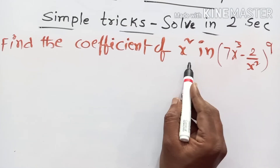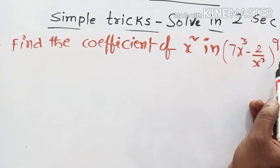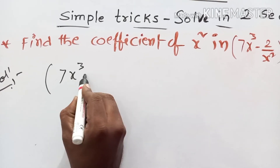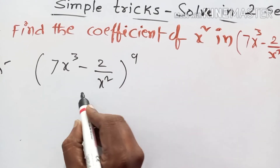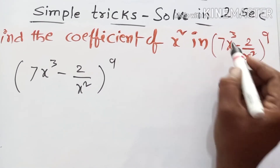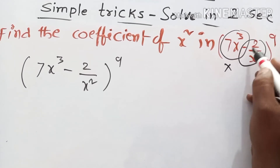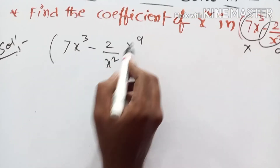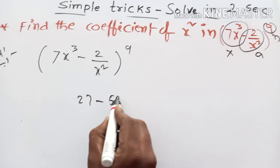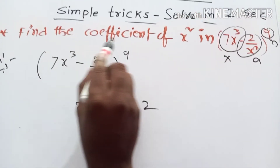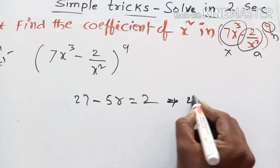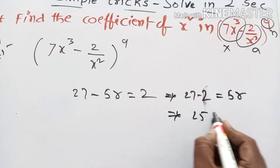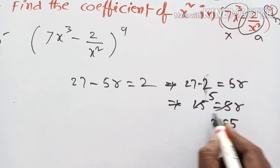Find the coefficient of x squared in (7x cubed minus 2 by x squared) whole power 9. Given expansion is (7x cubed minus 2 by x squared) whole power 9, comparing with (x plus a) whole power n. First term is 7x cubed, a is minus 2 by x squared, n is 9. Finding r: 9 threes are 27, minus 3 plus 2 gives 5r equals 2. We need the coefficient of x squared, so 27 minus 2 equals 5r, implying 25 equals 5r, so r equals 5.